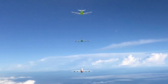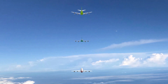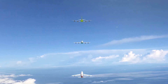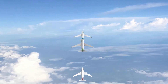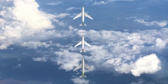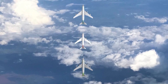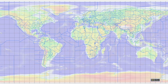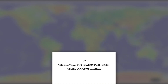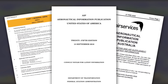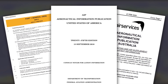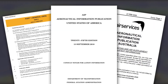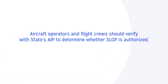Strategic lateral offset procedure, or SLOP, improves airspace safety. It increases the lateral separation between aircraft by introducing a randomness in aircraft lateral position with respect to route centerline. States must authorize the use of SLOP in their Aeronautical Information Publication, or AIP. Aircraft operators and flight crews should verify with the state's AIP to determine whether SLOP is authorized.